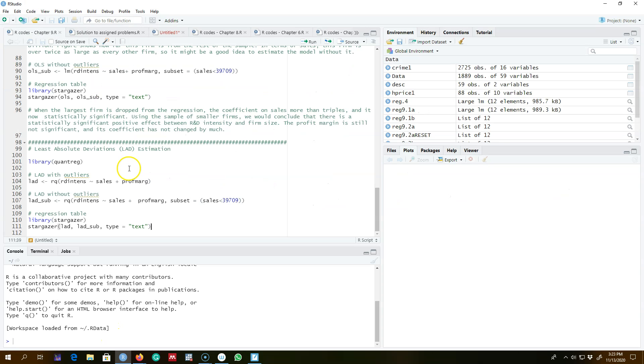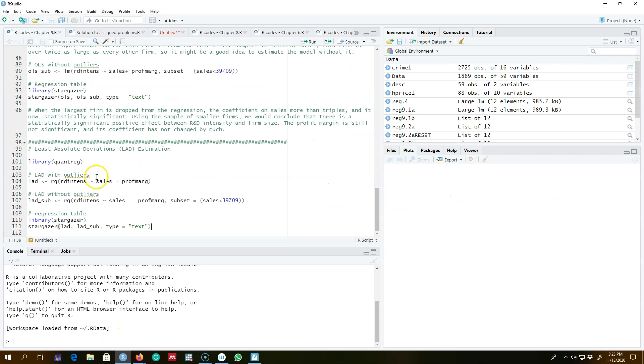So let me show you an example. I'm going to use the same dataset that I used earlier and I'm going to regress R&D expenditures on sales and profit margin.